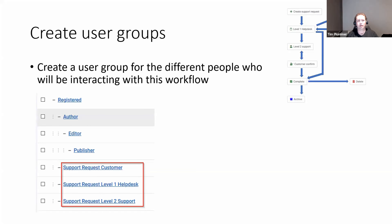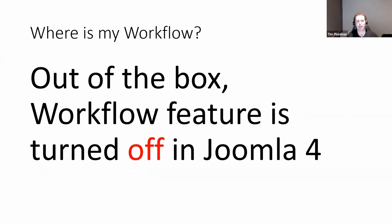Now that we've got our custom fields, the next thing we're going to do is create some user groups. In this particular example, we've got three main users for our workflow: the customer who creates a support request, the help desk person that processes a request, and the level two support that solves a request. So we're going to create a custom user group for each of those.